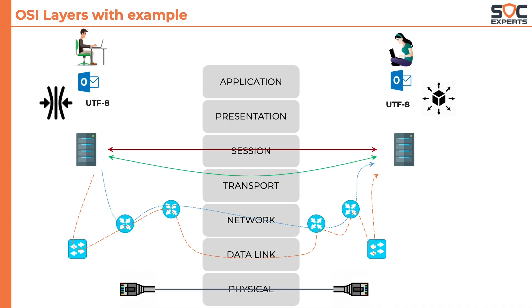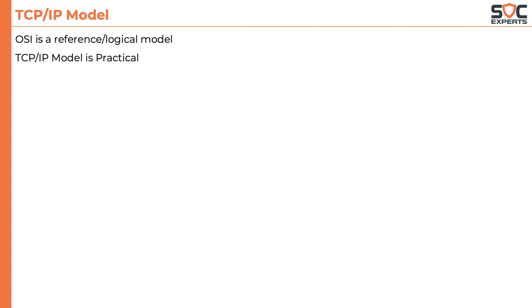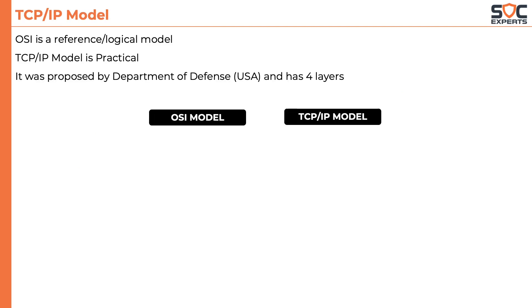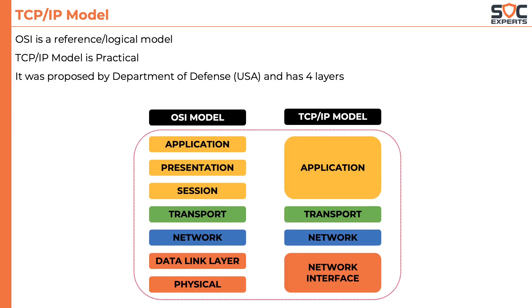That's why another model was developed called the TCP/IP model. The TCP/IP model is a more practical one. It was developed by the Department of Defense of the USA and has only four layers. The top three layers of the OSI reference model were shrunk into one layer called the application layer, which does everything the three OSI layers did. The transport and network layers remain the same. The lower two layers — the data link layer and the physical layer — were combined into one layer called the network interface layer, also referred to as the network access layer or host-to-network layer.